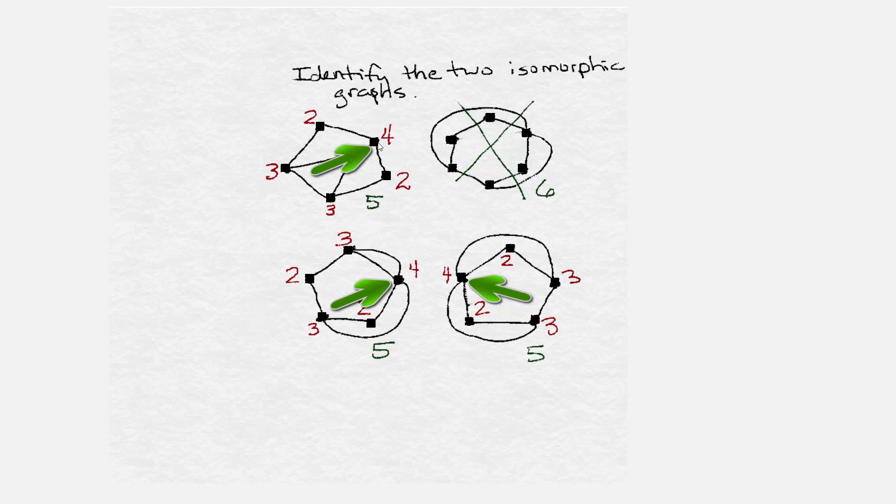Notice that in each graph, there is one vertex of degree four. And in each case, that vertex of degree four connects the graph directly to two vertices of degree three. We can see this here in the first graph, and we see it again here in the second graph, and we see it again here in the third graph. One edge connecting the vertex of degree four directly to two different vertices of degree three.